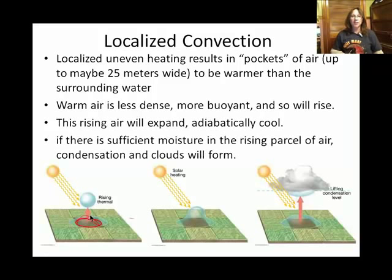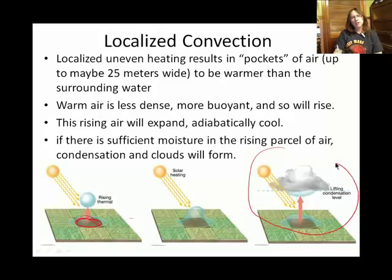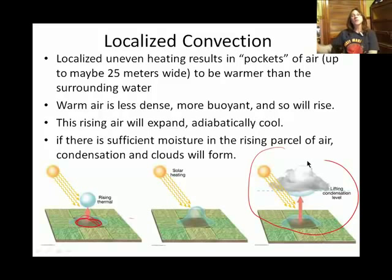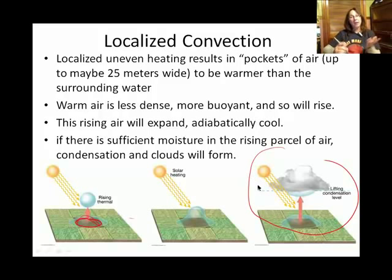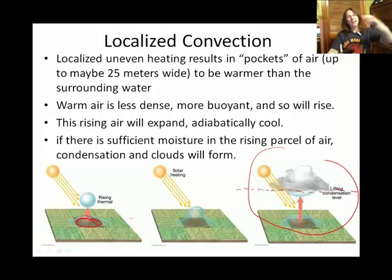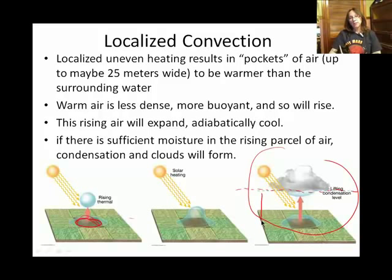Looking at this slide — we talked about ways of transferring thermal energy, one of which is convection. Convection is a blob of fluid, in this case air, that relocates and takes its thermal energy with it. That blob rises vertically, expands and cools. Depending on how much water vapor it carries, there's an elevation it must reach for condensation to occur — that elevation is the LCL, the lifting condensation level.